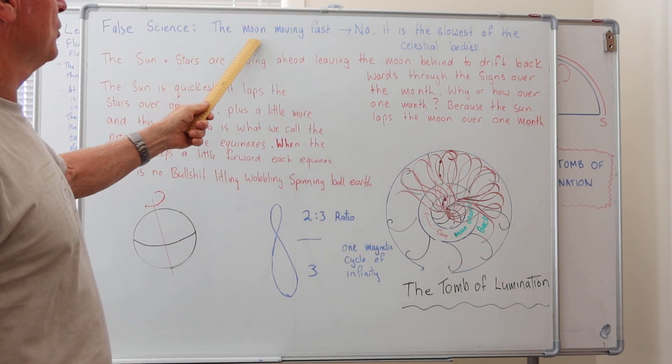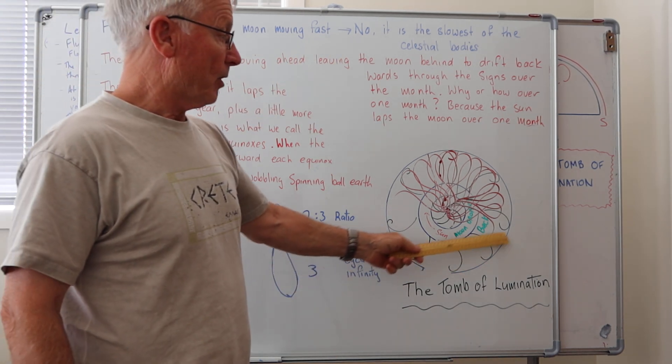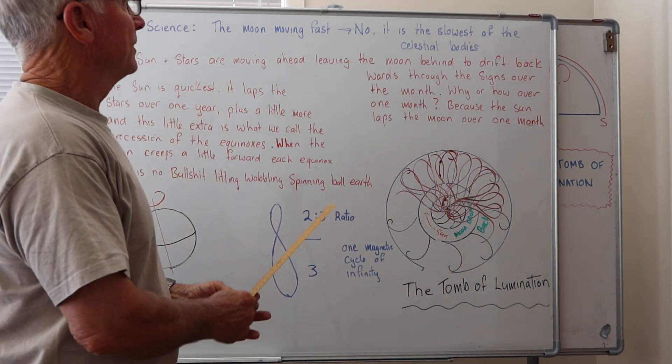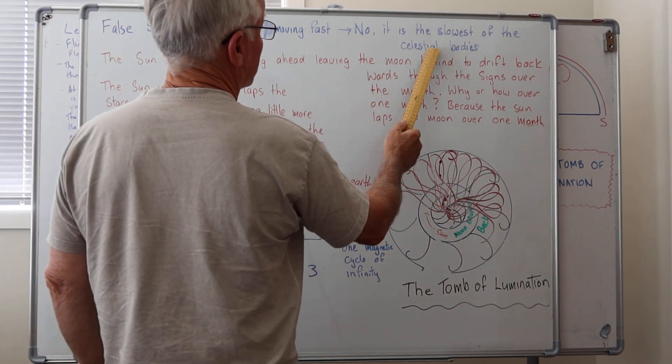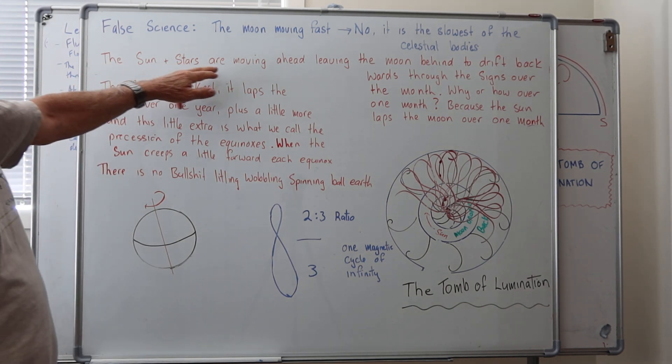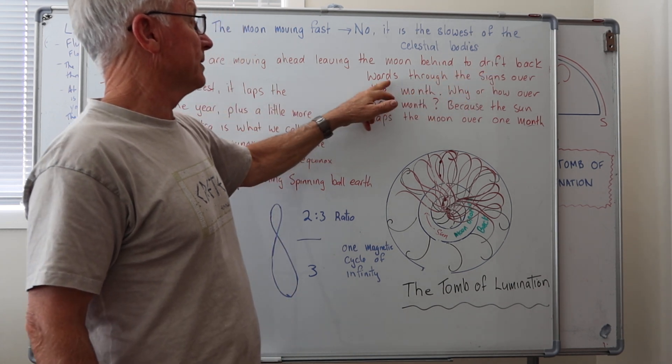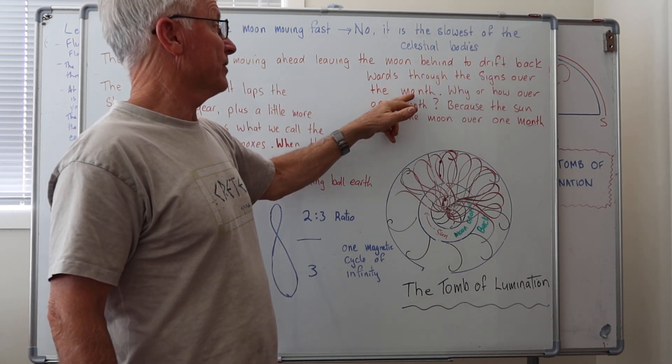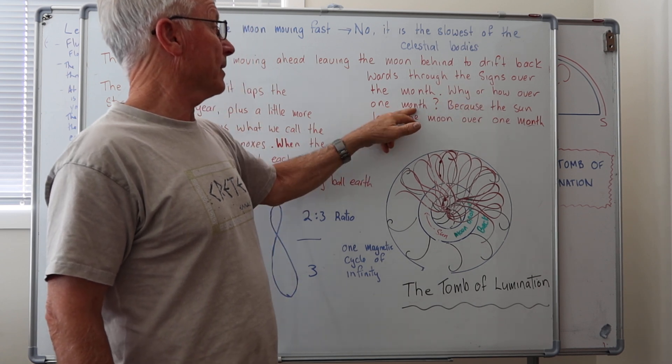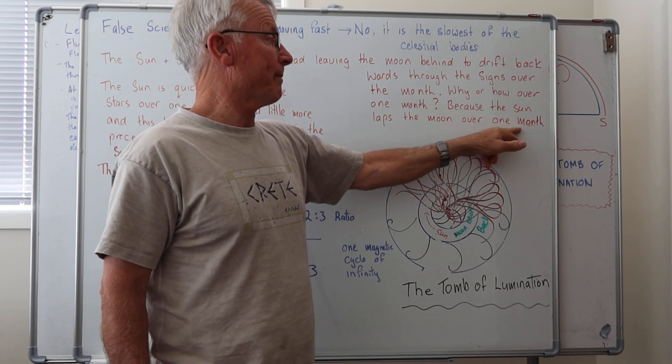False science. The moon moving fast. It does not move fast. It moves slow. It might go through the constellations fast, backwards. No, it is the slowest of the celestial bodies. The Sun and the stars are moving ahead leaving the moon behind to drift backwards through the signs over the month.